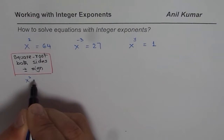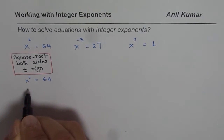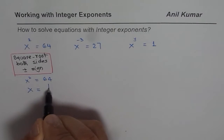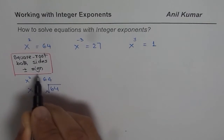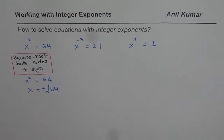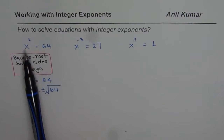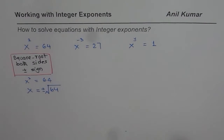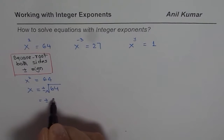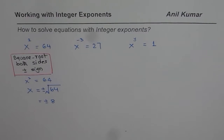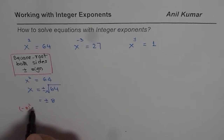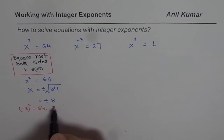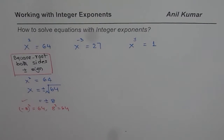So we have x squared equals 64. When I take the square root, I write x equals plus or minus the square root of 64. You have to incorporate both signs. And now you get your solution as plus or minus 8. You can check: negative 8 squared equals 64, and 8 squared also equals 64. So that is the correct solution — that is the first part.